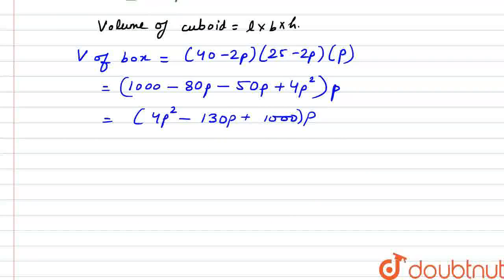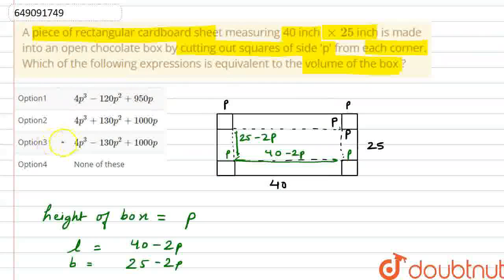Now, if we solve it. Here will be our volume of box. Finally, volume of box. That will be P terms. 4P square into P is 4P cube. Minus 130P into P is 130P square. Plus 1000P. This will be our final volume of box. And if we check the option, here will be our correct option. Option 3. Which is 4P cube minus 130P square plus 1000P. So, this will be our match. Option 3 is our final answer. Thank you.